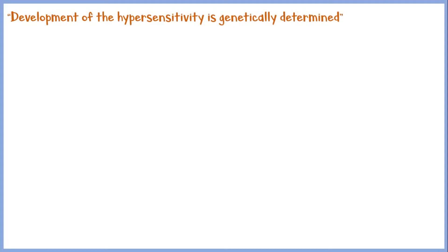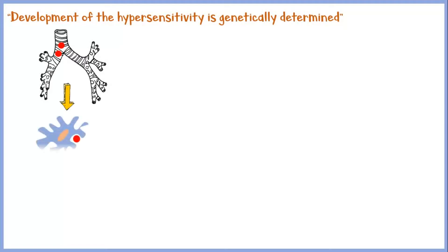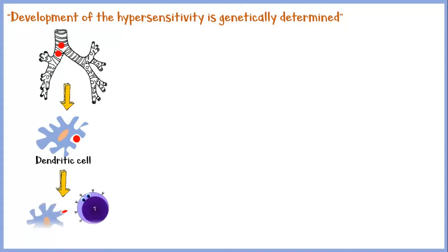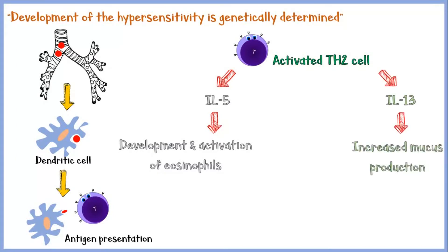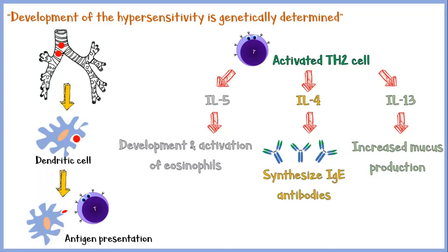As mentioned before, development of hypersensitivity in asthma is genetically determined. When an allergen like a pollen reaches the airways, it is engulfed by dendritic cells located in the mucous lining of the airways. The dendritic cell will process the foreign antigens and present them to a naive CD4-positive T-helper cell. This antigen presentation results in activation of the T-helper cell, which then secretes interleukin-5, increasing eosinophil development and activation; interleukin-13, which increases mucous accretion; and interleukin-4, which increases the synthesis of IgE antibodies. These IgE antibodies are the principal mediators responsible for the pathogenesis of asthma.